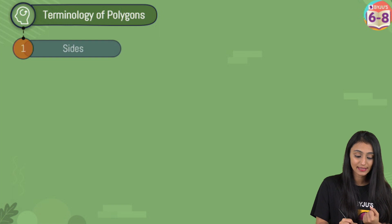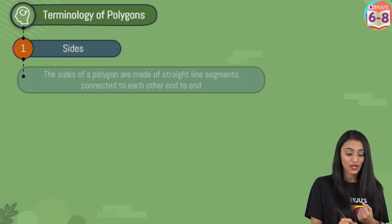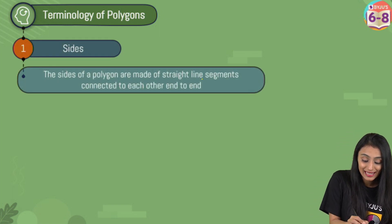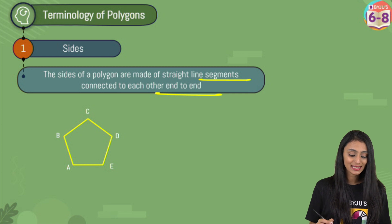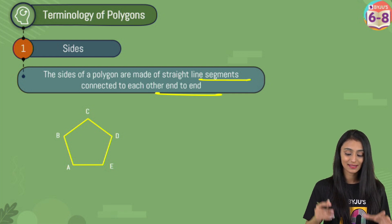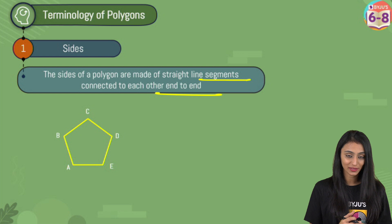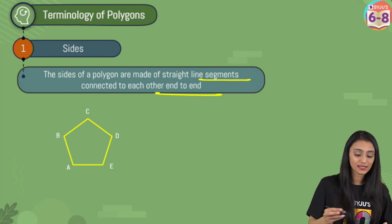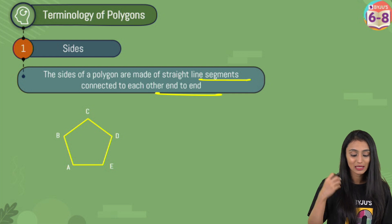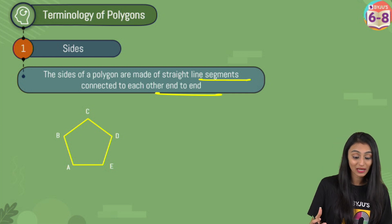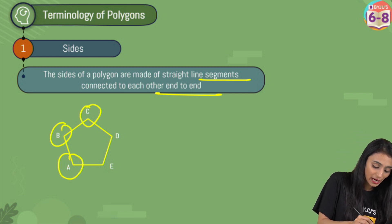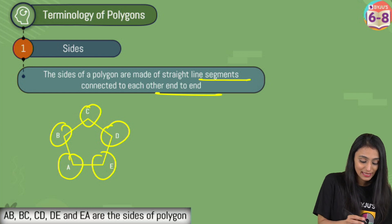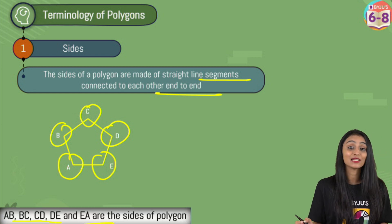Now let's look at some of the terminologies of polygons. The first is the sides of a polygon. Sides of a polygon are basically made up of straight line segments connected to each other end to end. Here you can see ABCDE — this is a five-sided polygon. All of them are line segments: AB, AE, ED, DC, and CB — all line segments, connected end to end, and it is closed. So AB, BC, CD, DE, and EA are the sides of the polygon.